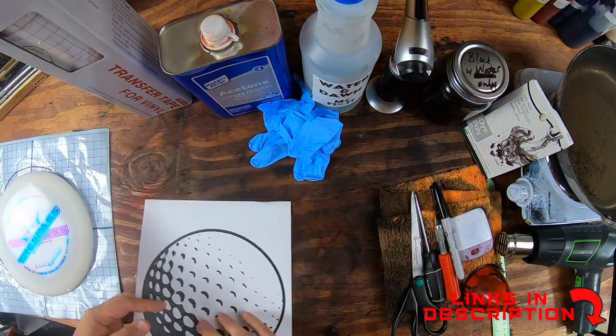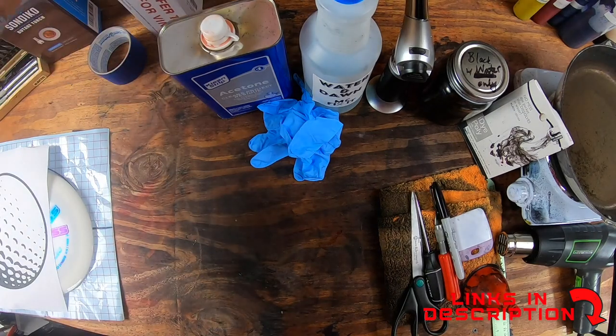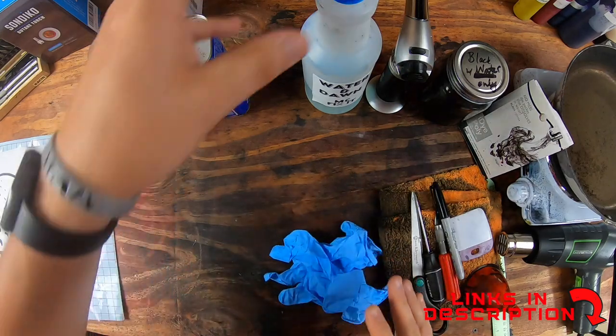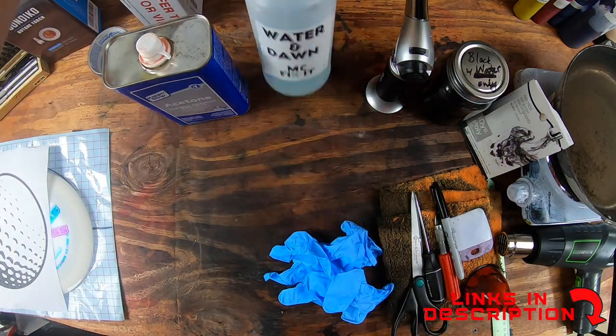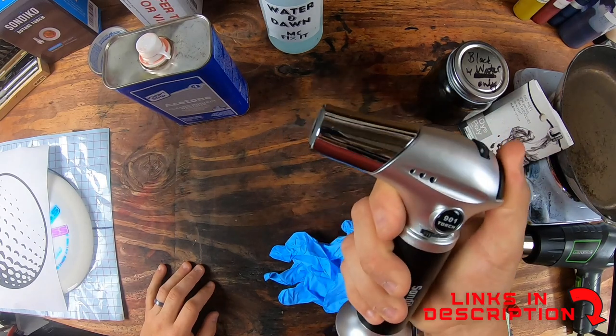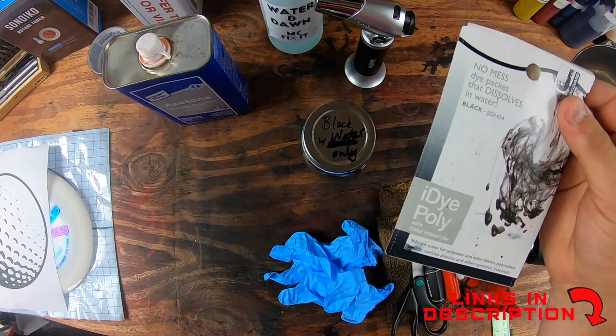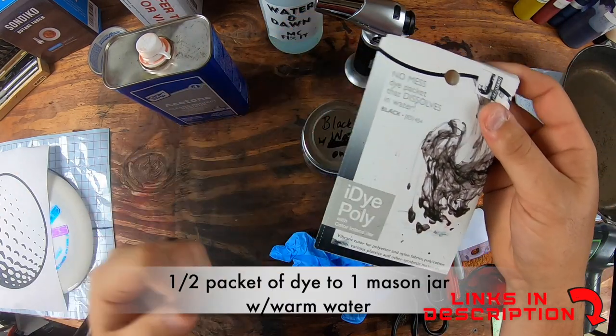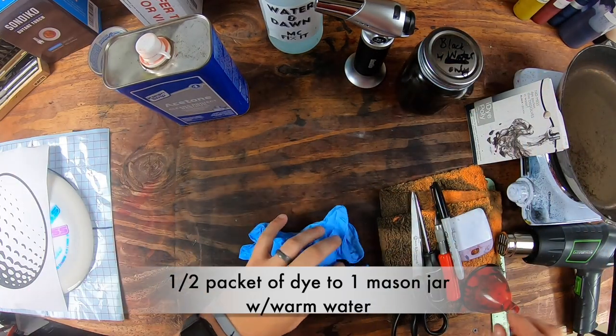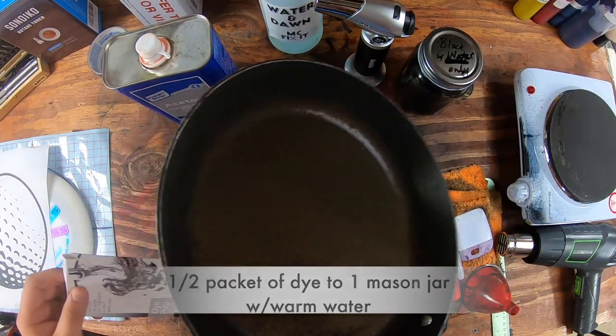We're going to use acetone. Acetone will help remove the stamp. Wear gloves when using acetone. Dish soap and water helps clean up the disc. Butane torch. It's got a little packet in there. You use half of the packet and put it in water only, no acetone needed. Then we have a pan, just a used pan.